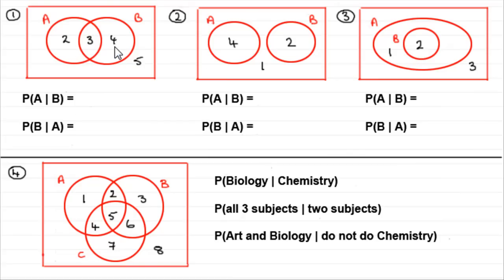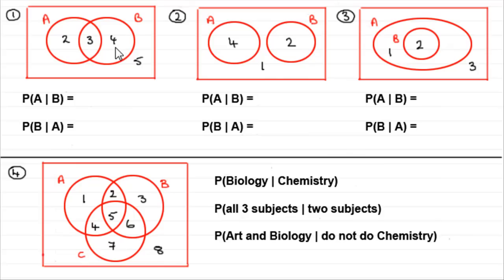In the first one, we've got two overlapping sets. We could imagine that A and B stand for number of people doing, say, a particular subject like art and biology. Looking at this, we've got two people doing art only, three people doing art and biology, four people doing just biology, and five people doing neither art nor biology.